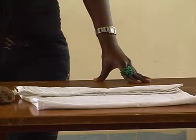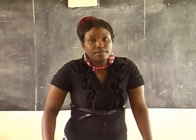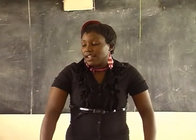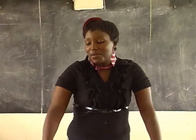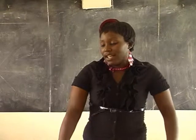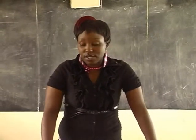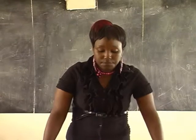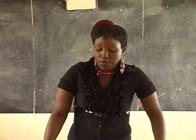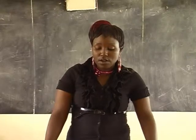As we conclude our lesson: transparent materials allow light to pass through them and one can see through them. Translucent materials allow light to pass through them but one cannot see through them. Opaque materials do not allow light to pass through them and one cannot see through them.